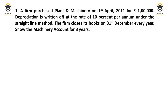When solving a depreciation problem, note three important things: first, the method of depreciation — straight line or diminishing balance; second, the percentage of depreciation; and third, when you are closing your books of account. There are two types of year — calendar year, which runs from 1st January to 31st December, and financial year, which runs from 1st April to 31st March.